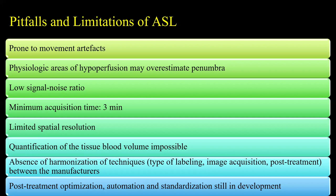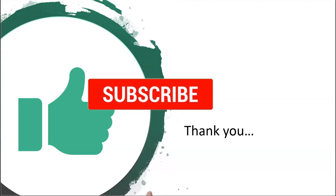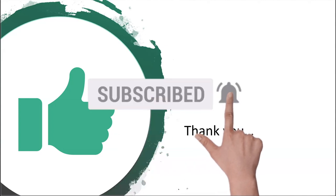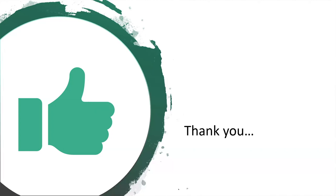There are pitfalls to this technique as well: it is very prone to movement artifacts, and patient positioning is important. Physiologic areas of hypoperfusion may overestimate penumbra — as seen with benign oligemia and white matter, which are usually hypoperfused. The technique has a low signal-to-noise ratio and performs better on 3 Tesla scanners. A minimum acquisition time of three minutes is required, spatial resolution is limited, quantification of blood volume is not possible (only CBF is measured), and comparison across manufacturers may not be very robust. Thank you for your patient listening.